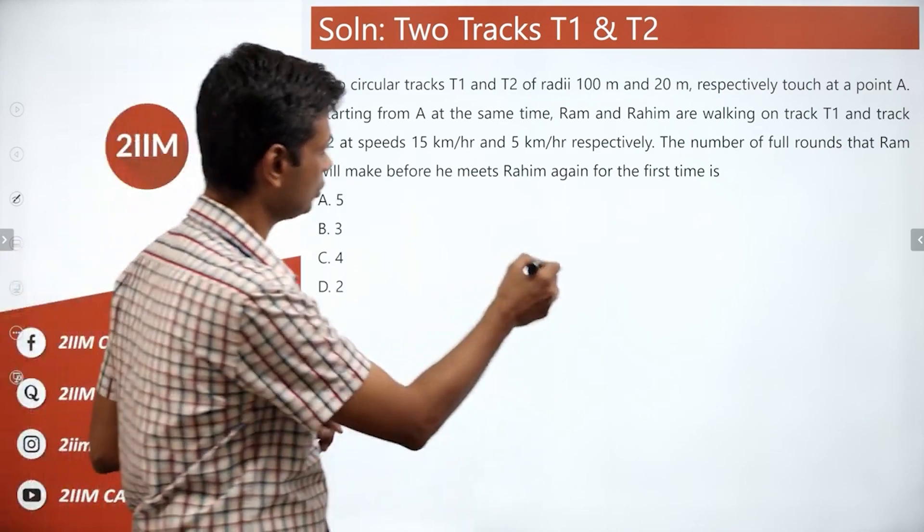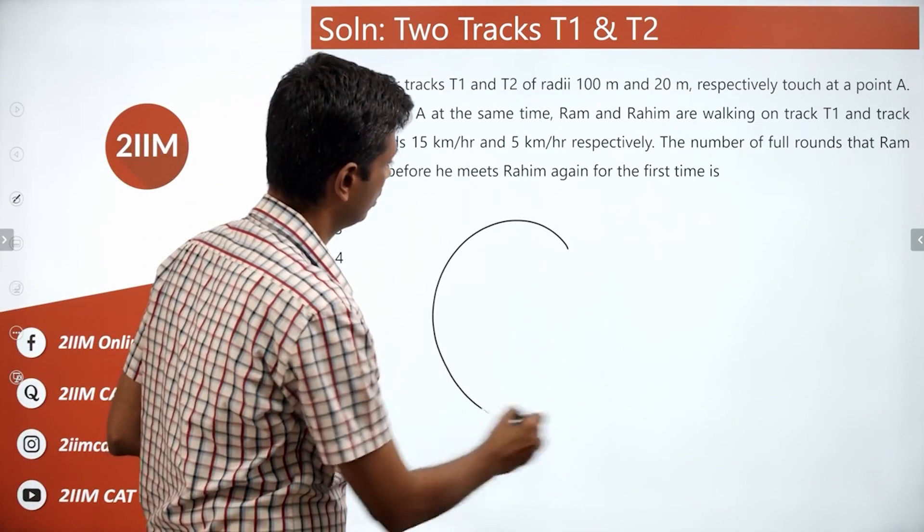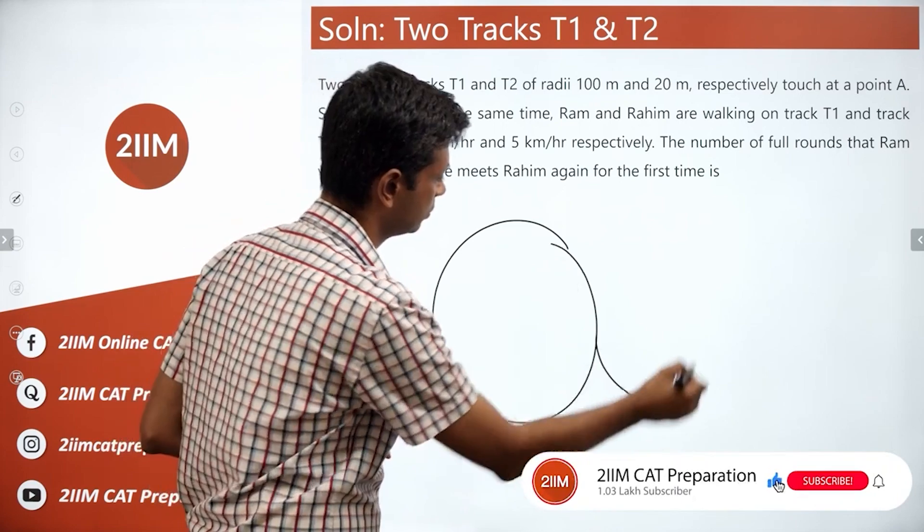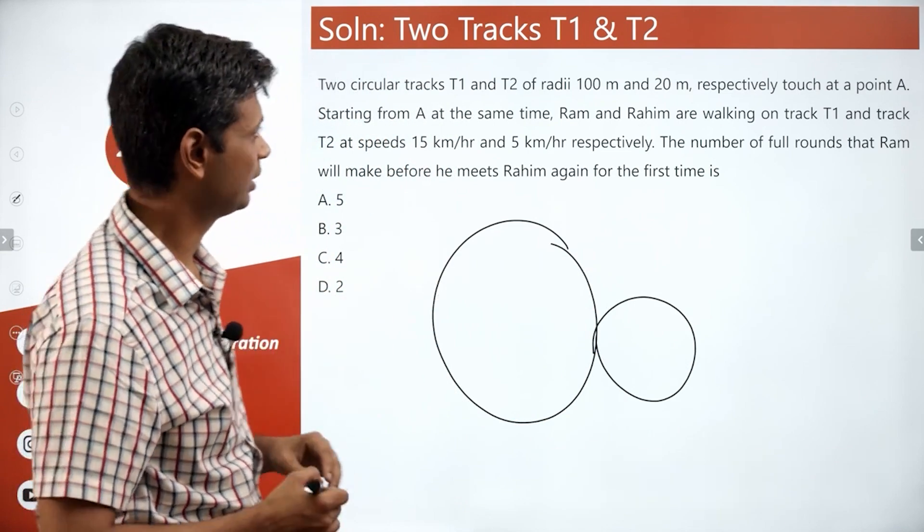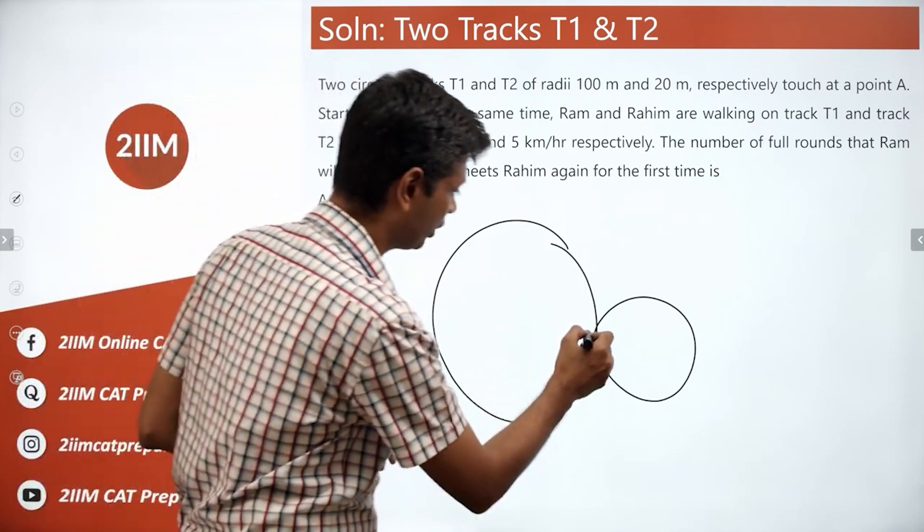Interesting question. So, let's talk about T1, T2. This has radii 100 meters, this has radii 20 meters. They respectively touch at point A.